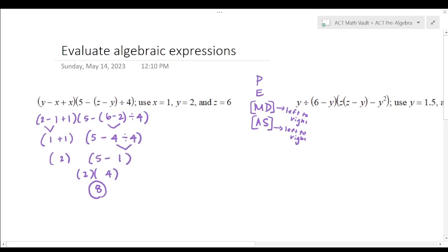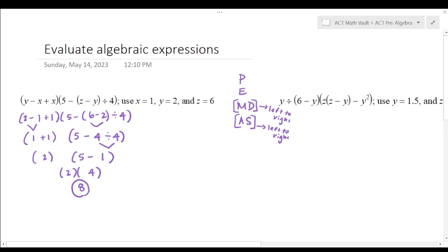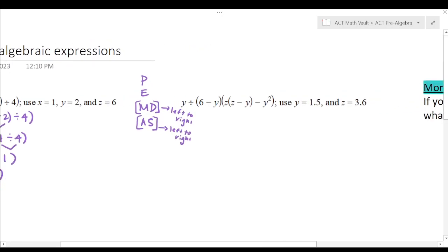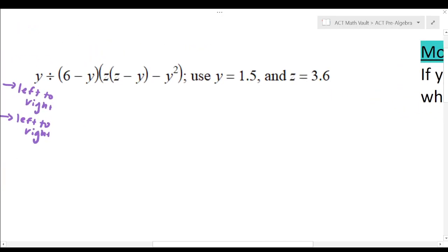Also note that if these are negative, it's a good idea to put them in parentheses. We don't have that case here, but that does happen quite often. All right, so 1.5 divided by 6 minus 1.5. Oh, then we have lots of parentheses here. I'm just filling everything in. 1.5 squared.